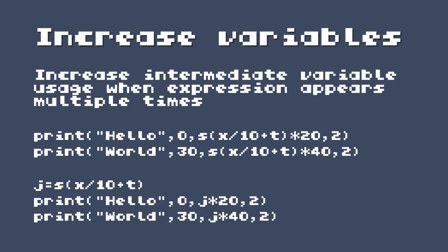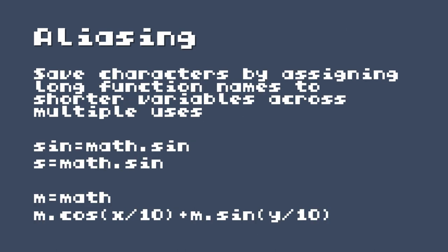We can save a few characters by getting rid of that variable C and placing the sine calculations directly into the pix function. The next technique is the exact opposite: increase your intermediate variable usage when an expression appears multiple times. For example, in something like a sine scroller, if the expression sin(x/10+t) appears in multiple print calls with different x and y values, you can bring that common part out into its own variable and multiply it by 20 or 40 as needed. This is more pertinent to TIC-80 due to the long math.sin names — you can save characters by assigning a long function name to a shorter variable. If you're using math.sin everywhere, alias it, and it'll save you characters. You can also alias just the math part to m, and do m.cos, m.sin.